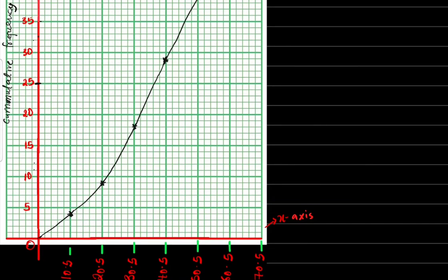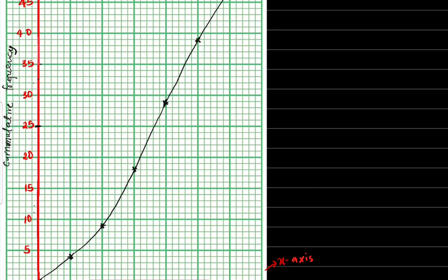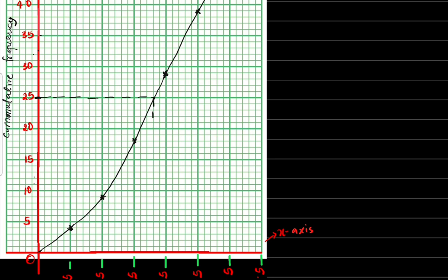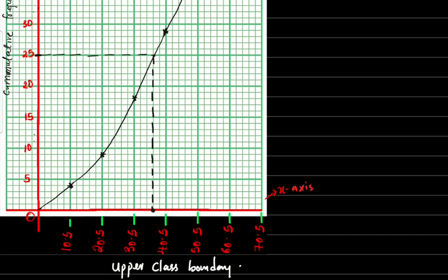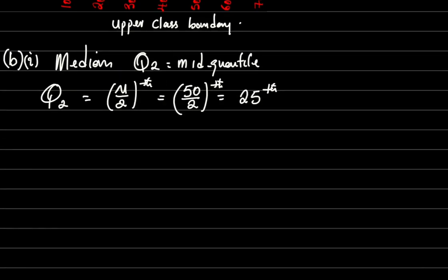On the ogive, I locate 25 on the cumulative frequency axis, trace a horizontal line to where it touches the curve using a ruler, then read off the value downward. Reading carefully: 30.5, 32.5, 34.5 — this gives 36.5. So my median from the graph is 36.5. Your answer depends on how neat and accurate your graph is.